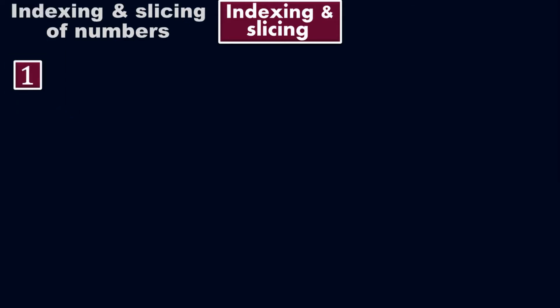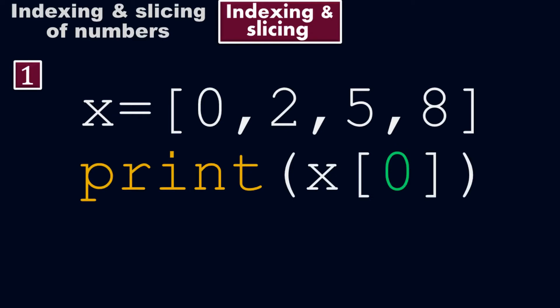Example number 1. x equals to 0 comma 2 comma 5 comma 8. Print of x of 0. It returns 0. Print of x of 0, x is this. If I put 0, it returns 0 here. Because at index 0, 0 exists here.